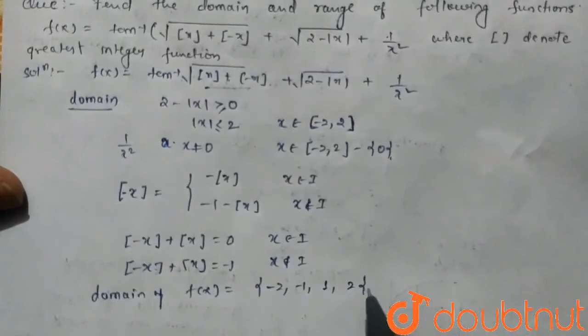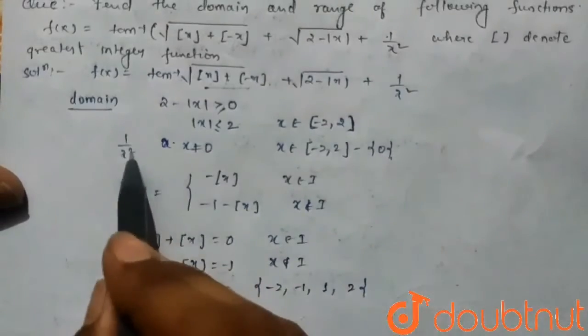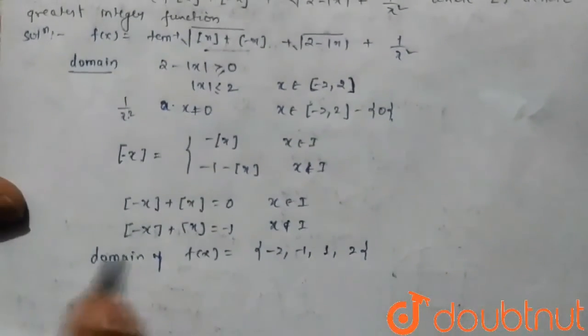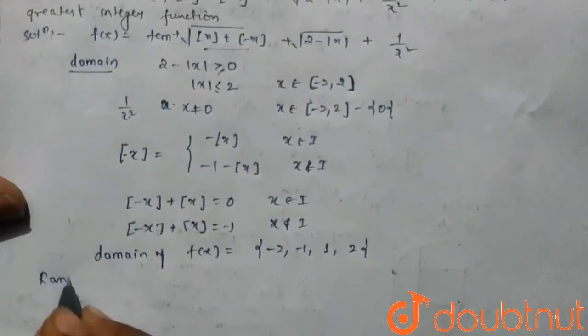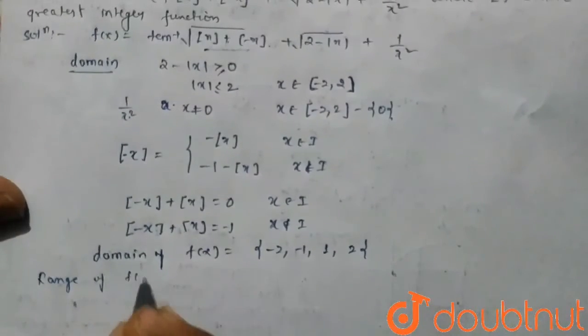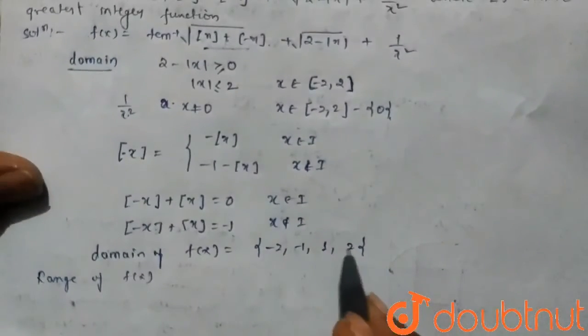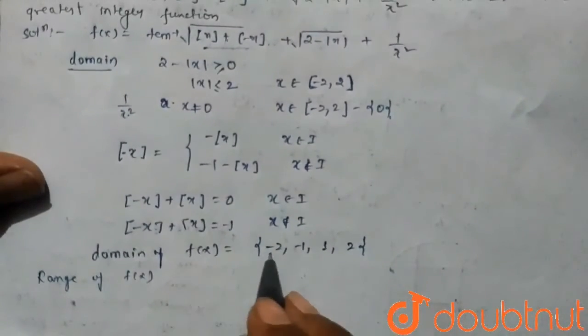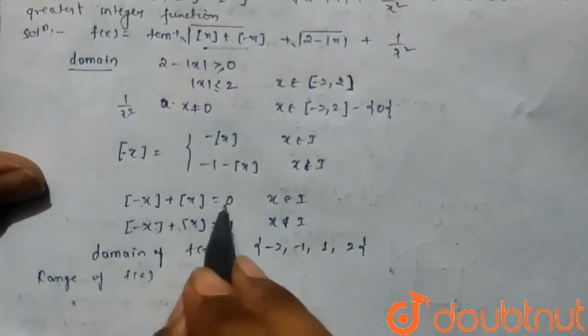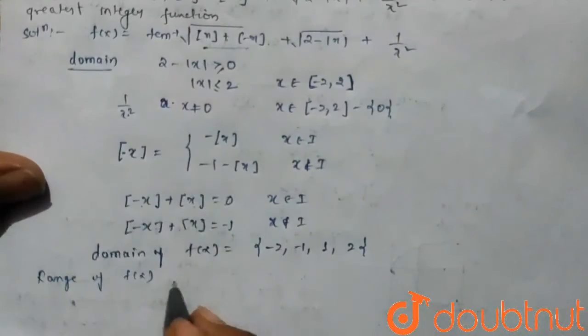And the range of values: f(x) at minus 2 and 2, we know that for integer value this value equals to zero. So tan inverse of zero plus, we know that mod x at plus minus 2 equals to zero.